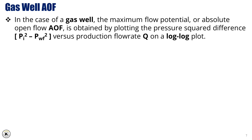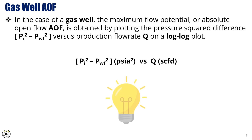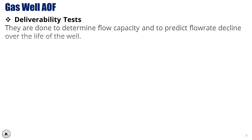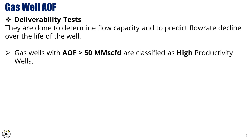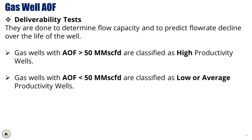Gas well AOF. In the case of a gas well, the maximum flow potential, or absolute open flow, AOF, is obtained by plotting the pressure square difference versus the production flow rate on a log-log plot. Deliverability tests are done to determine flow capacity and to predict flow rate decline over the life of a well. Gas wells with AOF greater than 50 million standard cubic feet per day are classified as high productivity wells, while those with AOF less than 50 million standard cubic feet per day are classified as low or average productivity wells.